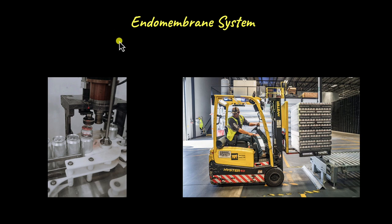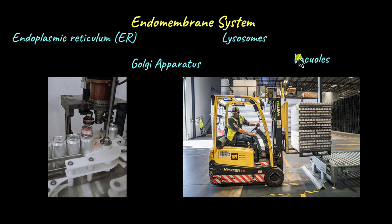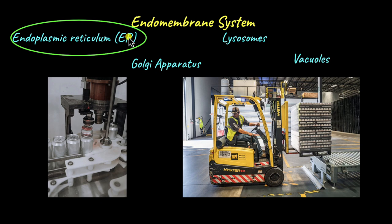The components of the endomembrane system include the endoplasmic reticulum or ER, the Golgi apparatus, lysosomes, and vacuoles. In this video, we are going to focus on the endoplasmic reticulum. We will talk about the Golgi apparatus, lysosomes, and vacuoles in another video.